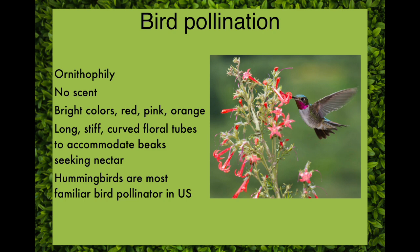Birds can also be effective pollinators — this is ornithophily. Birds don't have a strong sense of smell, so bird-pollinated flowers tend not to have a scent. But birds can see well and detect bright colors, so the corollas of bird-pollinated flowers come in red, pink, and orange. These flowers tend to have long, stiff, curved floral tubes with fused corollas to accommodate the beak of the bird pollinator. Around here, hummingbirds are our most familiar bird pollinator; in other parts of the world there are honey eaters and honey creepers.